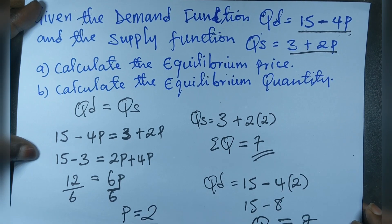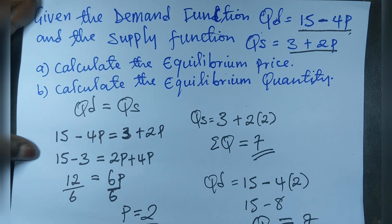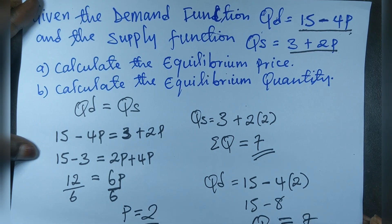So that's the simplest way to calculate the equilibrium price and equilibrium quantity when the demand function and supply function are given. See you in our next video, where we will be doing consumer surplus and producer surplus.